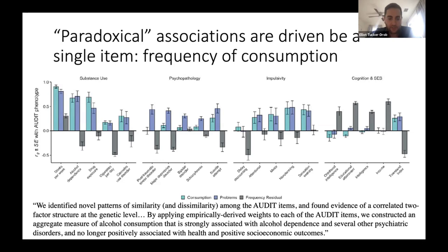They extracted two factors — the first three items tapping alcohol consumption, the remaining tapping more problematic use — and found that the frequency-of-drinking item (how many individual instances per week, not how much per sitting) had particularly heterogeneous associations with external outcomes. People who drink more frequently but perhaps not much per instance have genetics associated with higher income, higher educational attainment, and less depression. Meanwhile, all other aspects of drinking — amount per sitting and problematic use — are associated with psychopathology and lower social attainment.